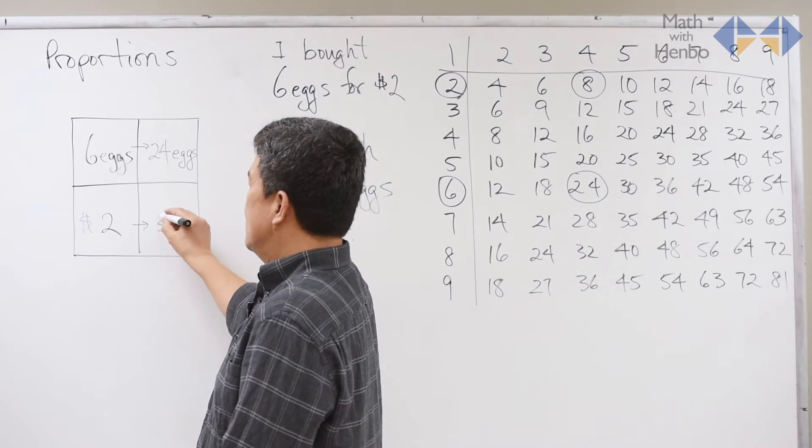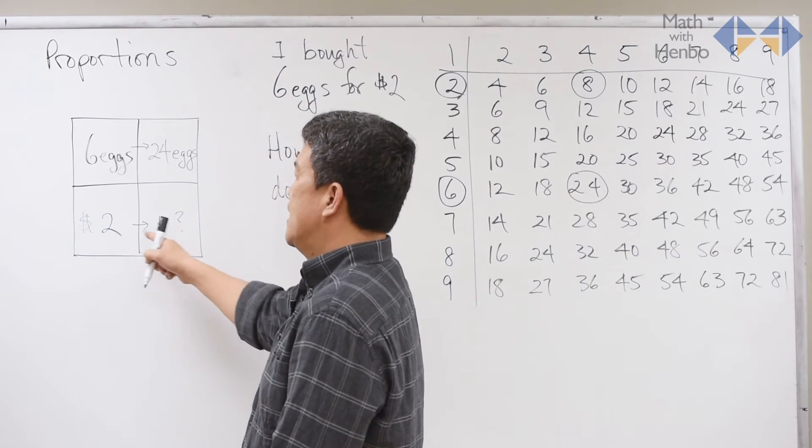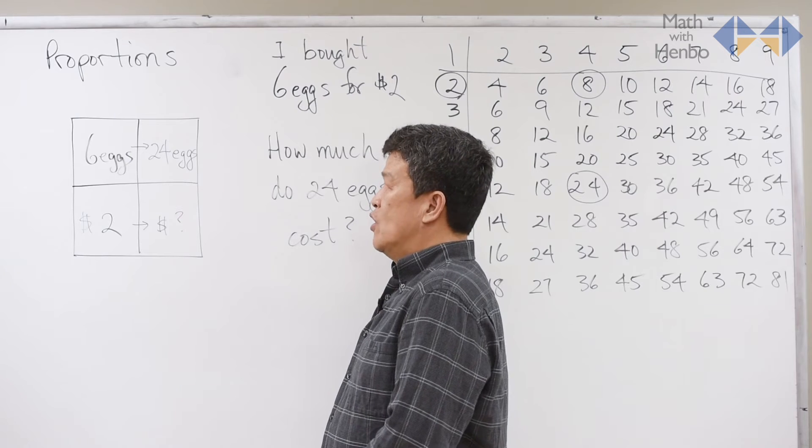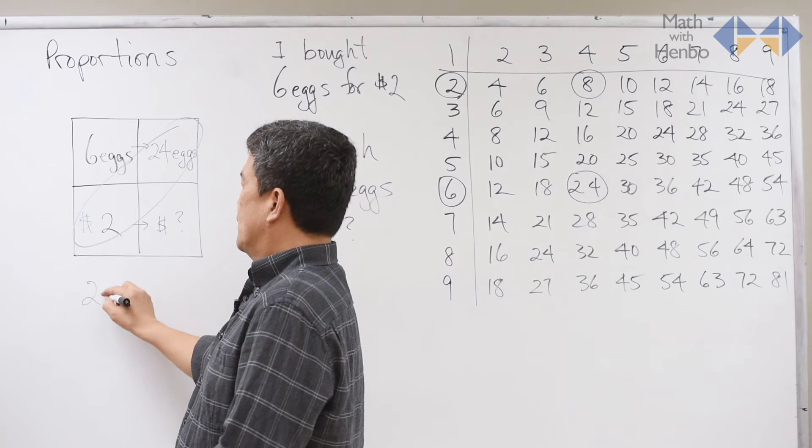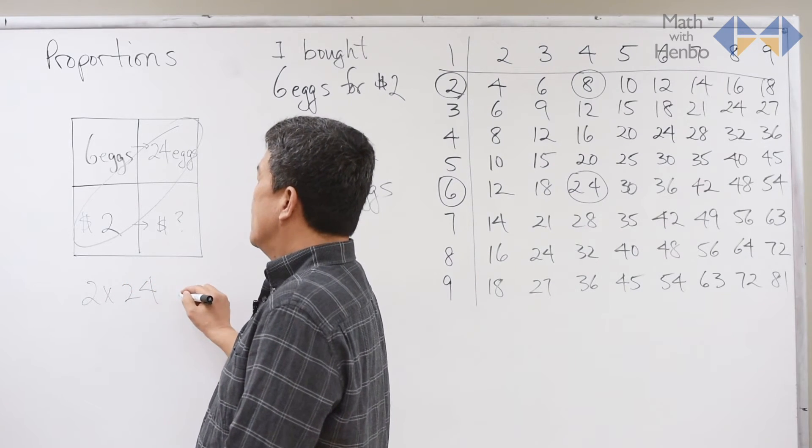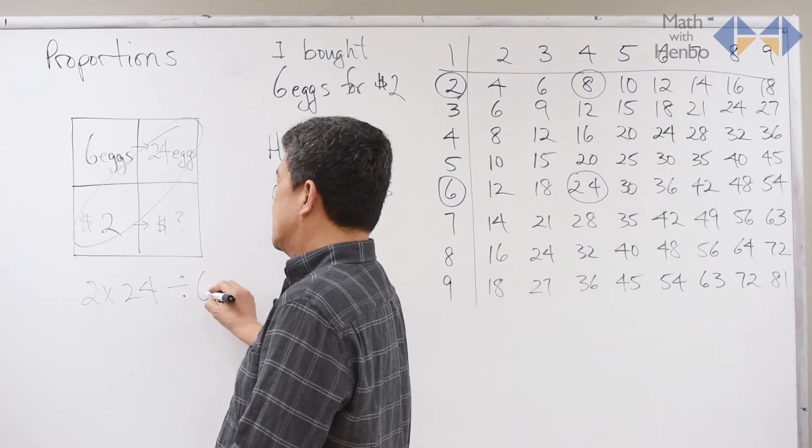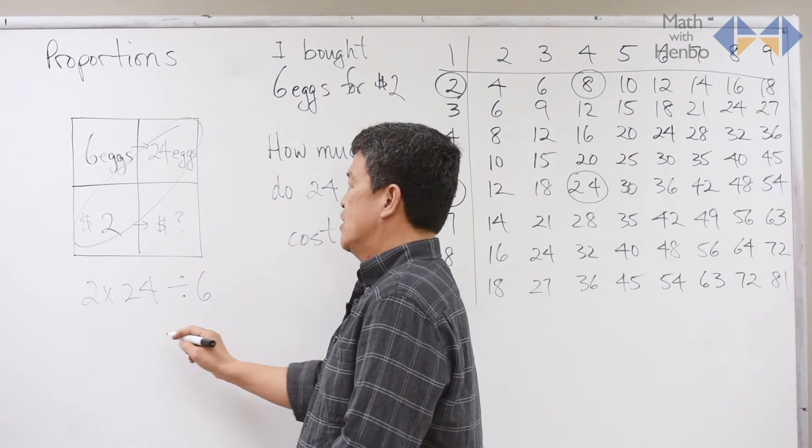And the dollar sign that I don't know appears in the same row as the 2. Once you establish this, just know, 2 times 24, and then being divided by 6 will give me the actual answer. So here, 48 divided by 6 is...